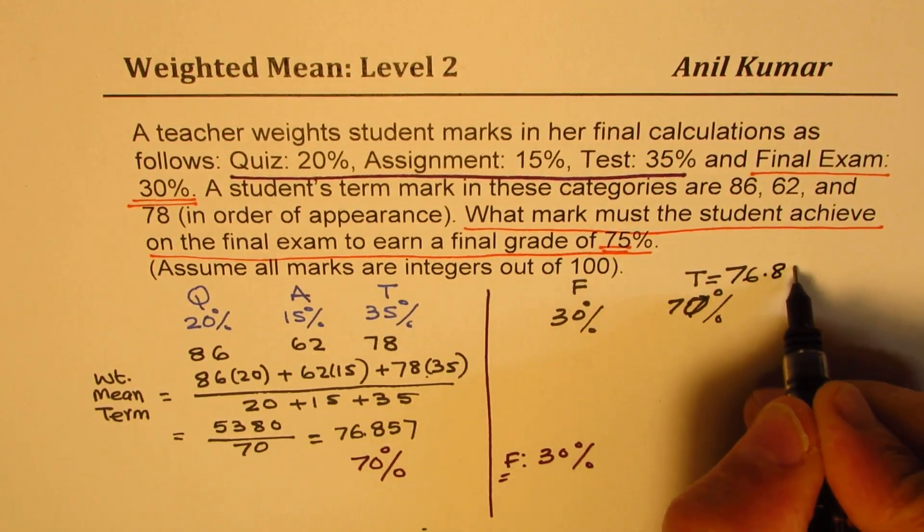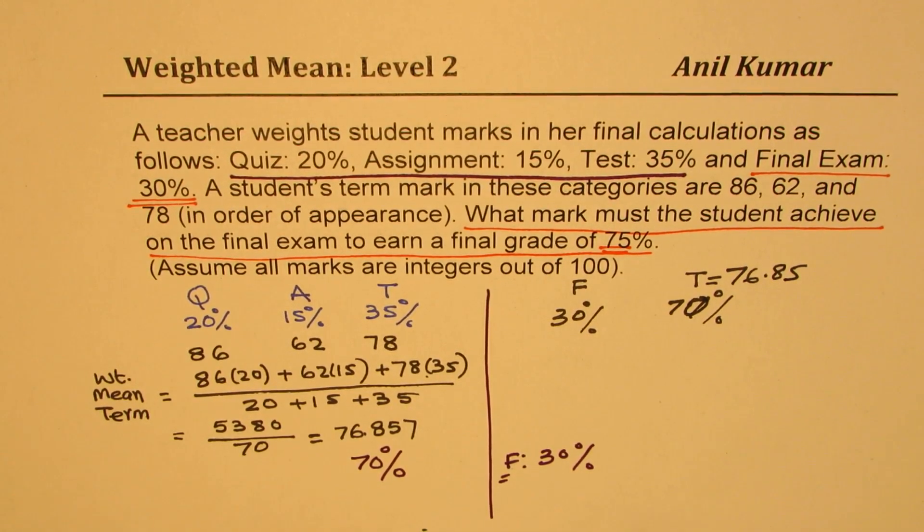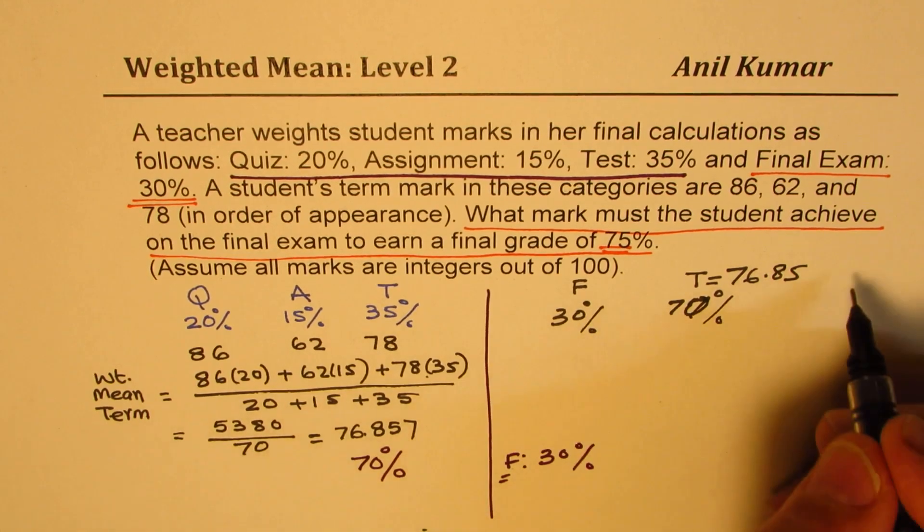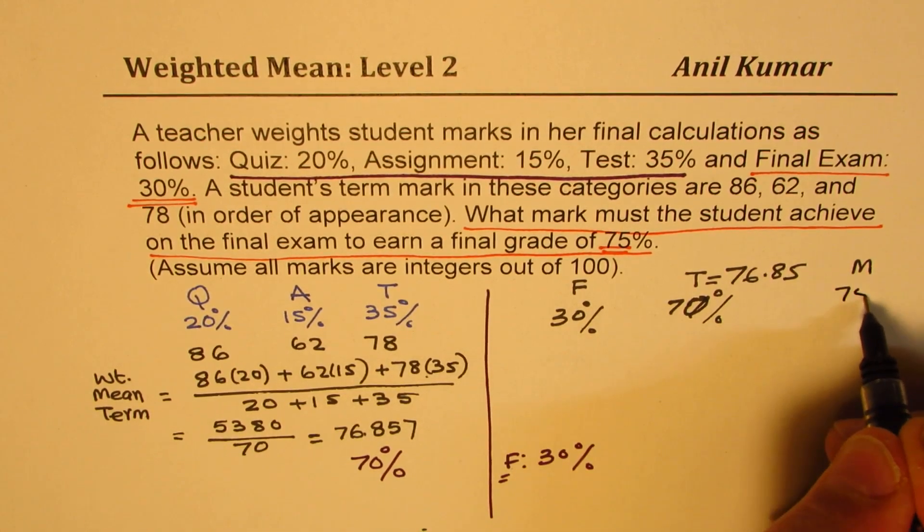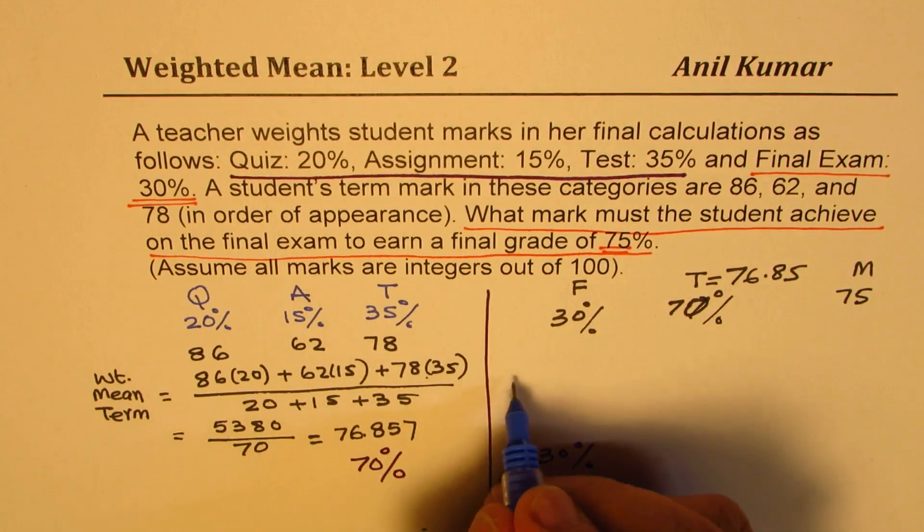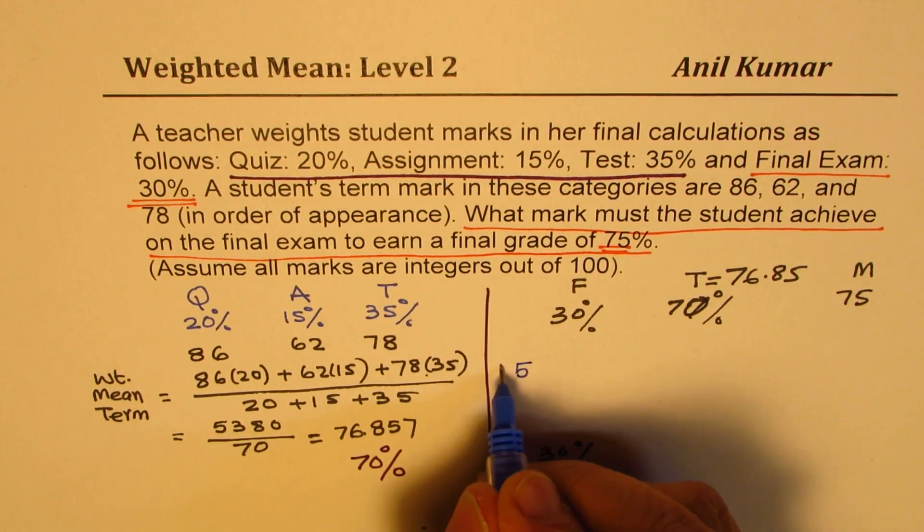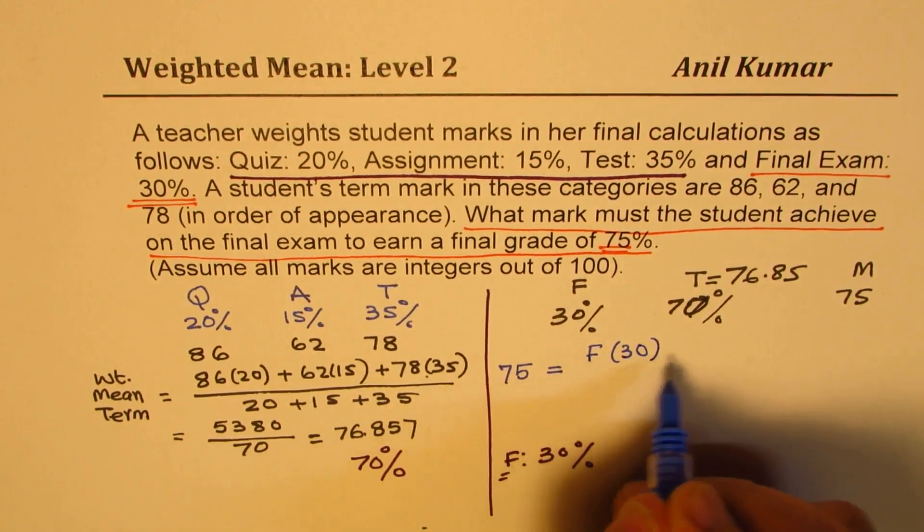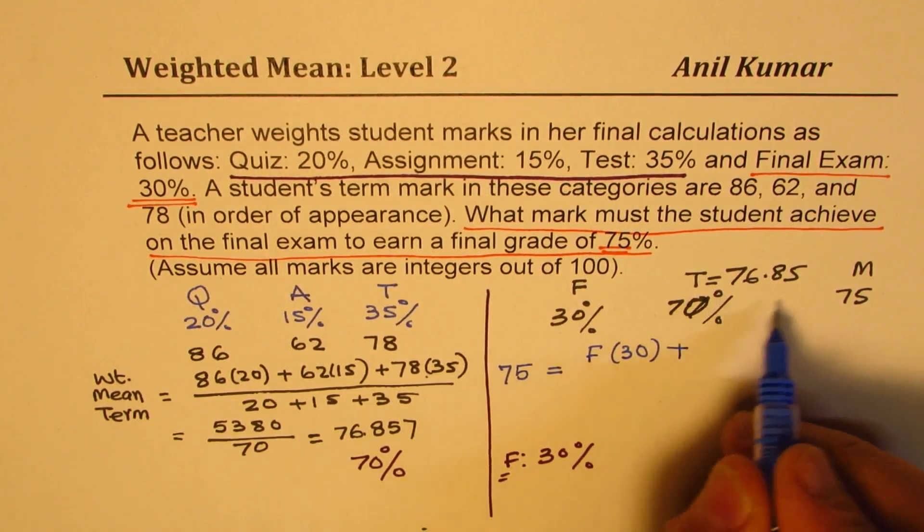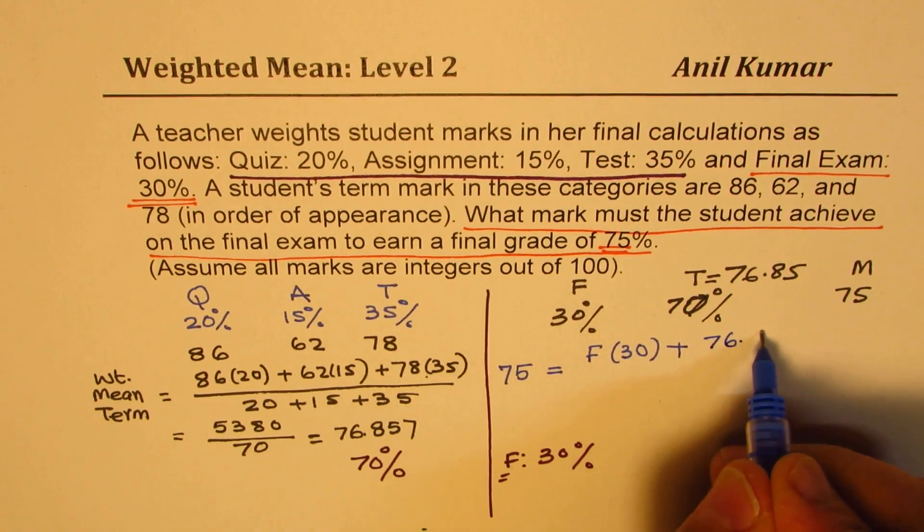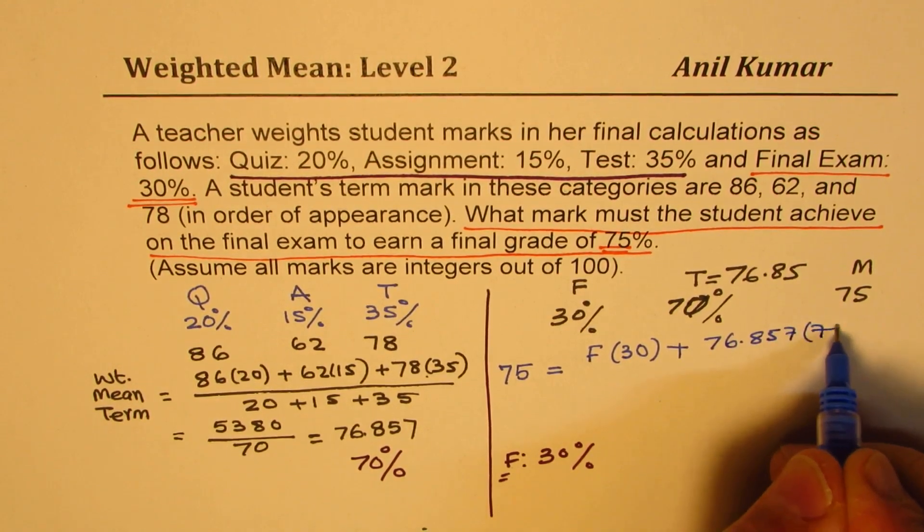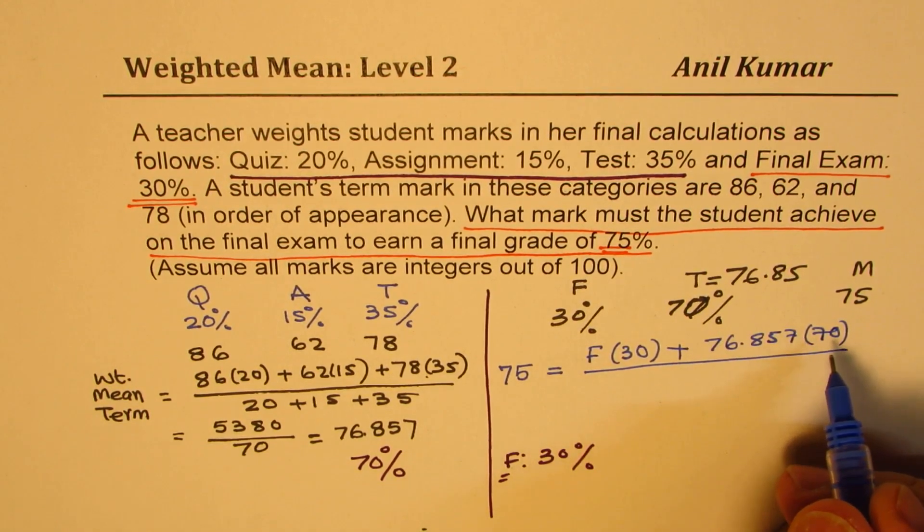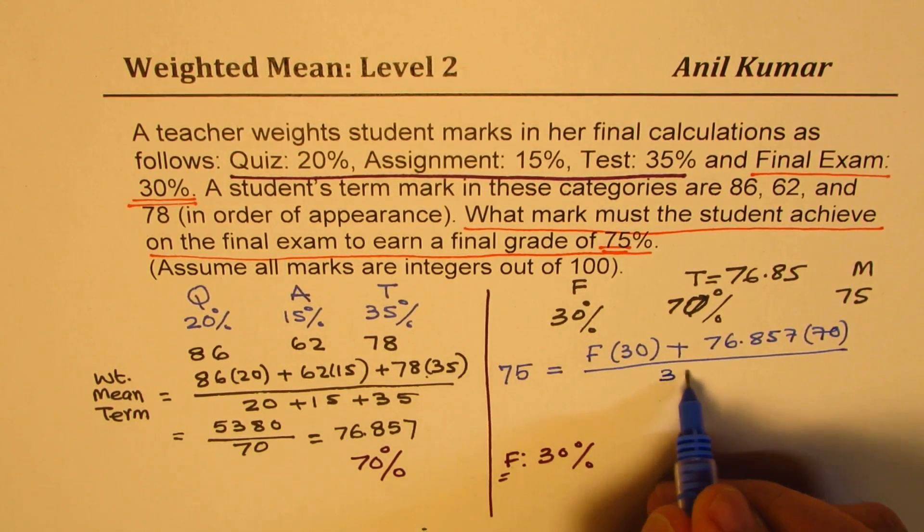Okay, so in this case we want a weighted mean of 75. So what the equation becomes: that means we want 75 should be equal to F times 30 plus this mark, which is 76.857 times 70, divided by 30 plus 70, which is 100. Correct? So that is what we have.